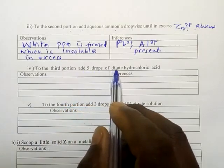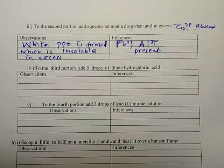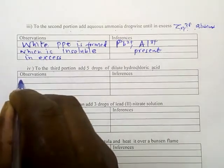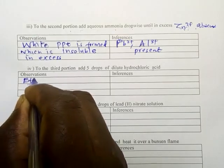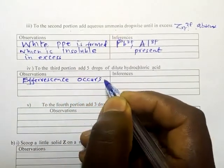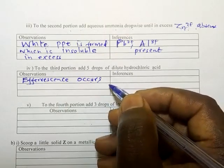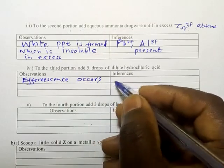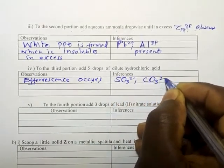To the third portion, add five drops of dilute hydrochloric acid. Whenever you are adding any acid into a solution that you are testing, observation number one is you expect a precipitate. Observation number two, you expect effervescence. So you need to give both observations. In this case, effervescence occurs. It means this acid went into that solution, met carbonate or sulfite, and produced the respective gases. So it means that sulfite and carbonate are present.